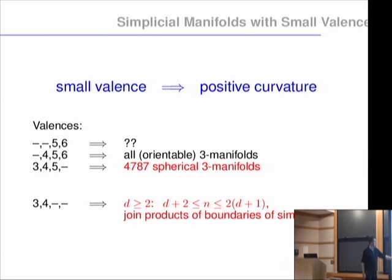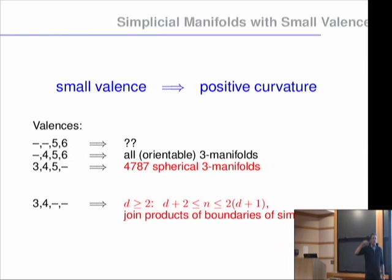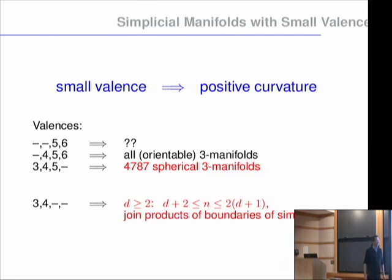If we reduce the valence condition further, then in every dimension d ≥ 4, where the valence restriction is on codimension-two faces — for surfaces we look at vertex valence, in dimension three at edge valence, and so on — requiring this restriction bounds the number of vertices above and below by an expression in the dimension. We can even say what the examples are: they are all join products of boundaries of simplices, giving a complete picture.